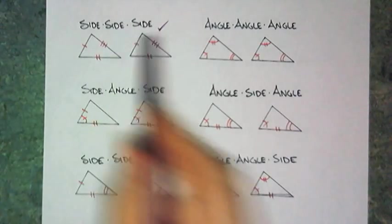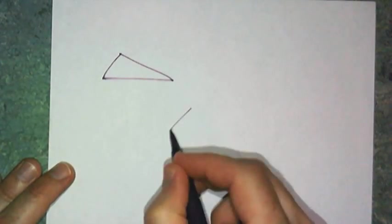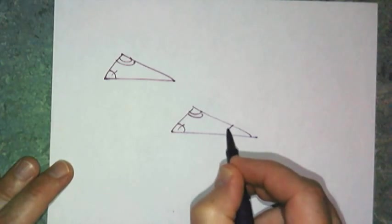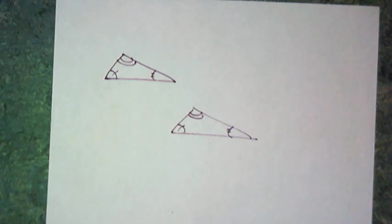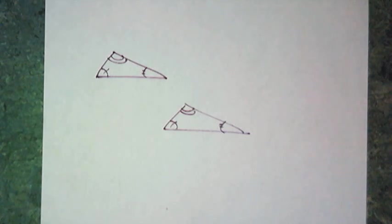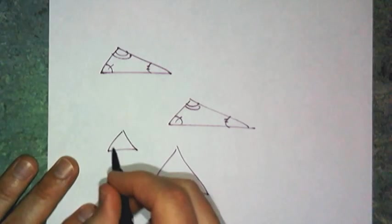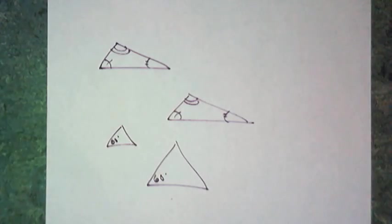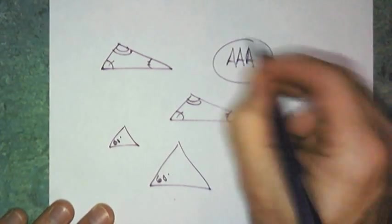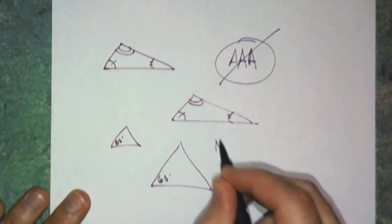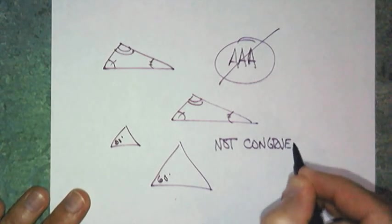Let's move on to angle-angle-angle. That means I have a triangle with three angles congruent to another triangle's three angles. Does that mean the two triangles must be congruent? No, because equilateral triangles come in all different sizes, and in equilateral triangles all the angles are 60 degrees. So angle-angle-angle is not a congruency shortcut — it tells me the shapes look similar, but they are not congruent.